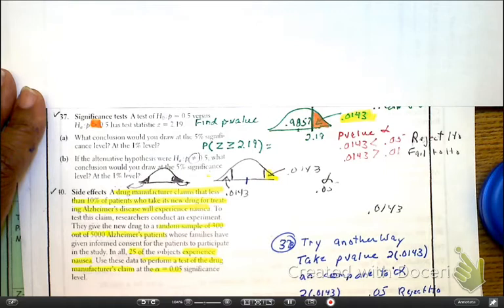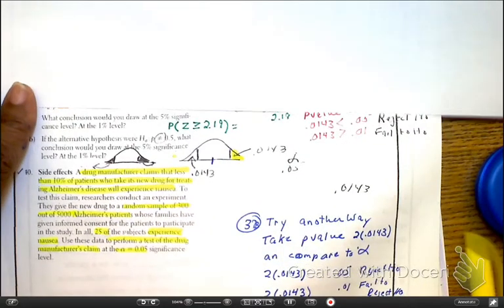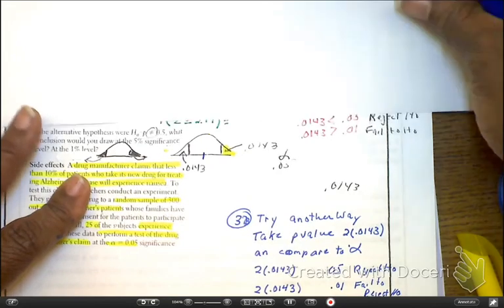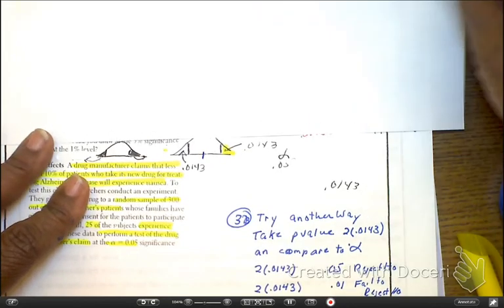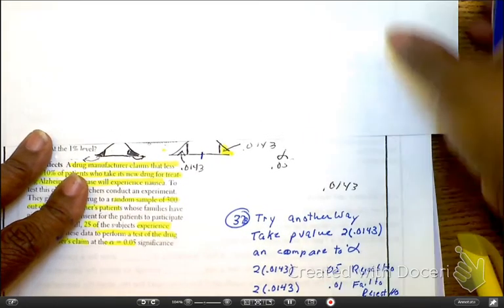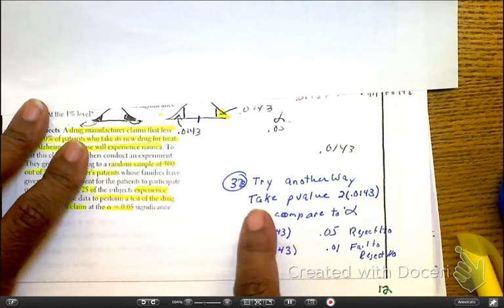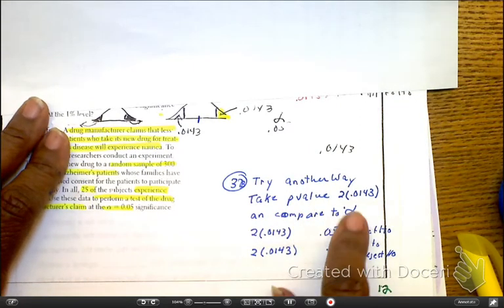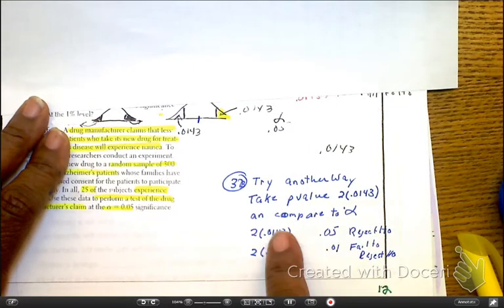Earlier today in one of the class periods I did it another way with a fraction, but I thought about it — nope, let's keep it simple. So whenever we do it by hand, we're just going to take the p-value and we're going to double it. And then we compare it to the alpha.